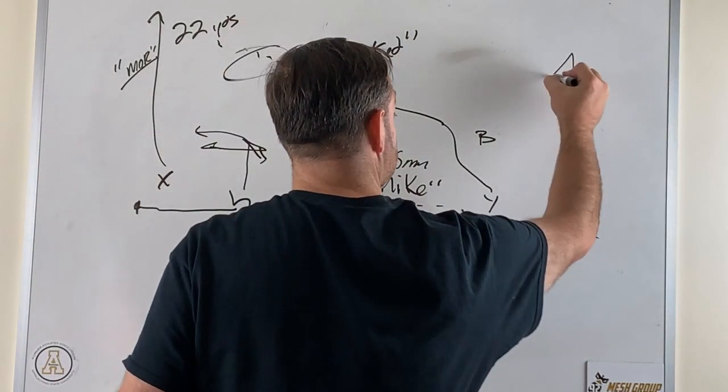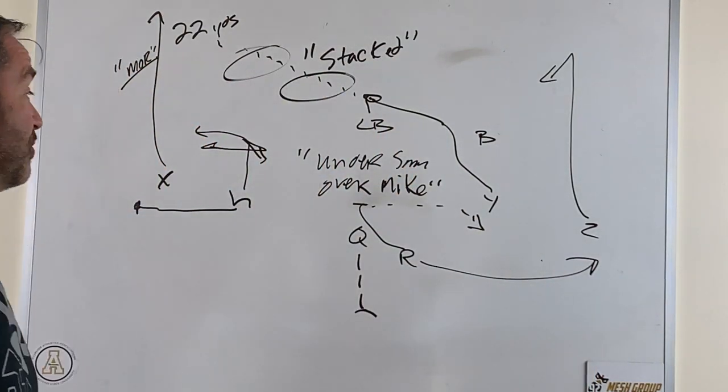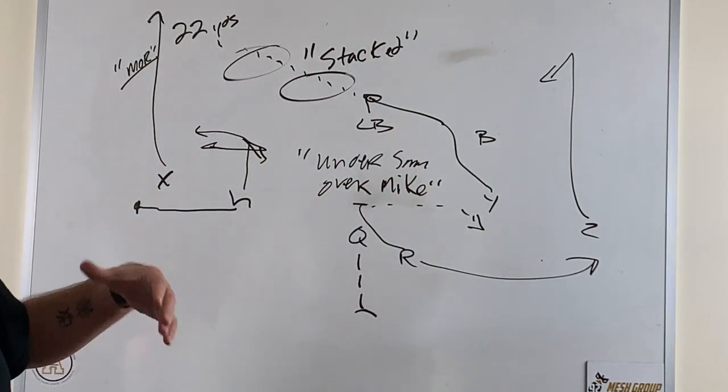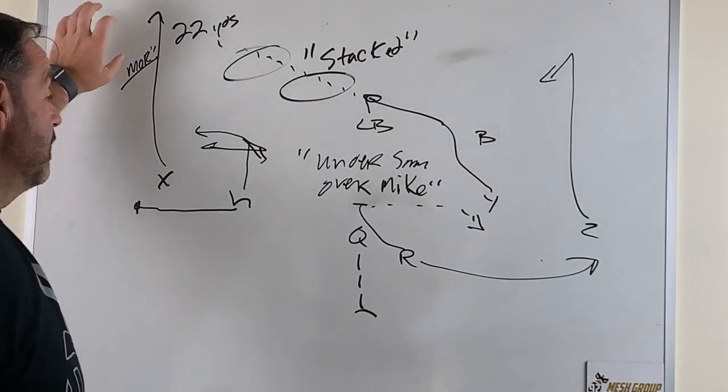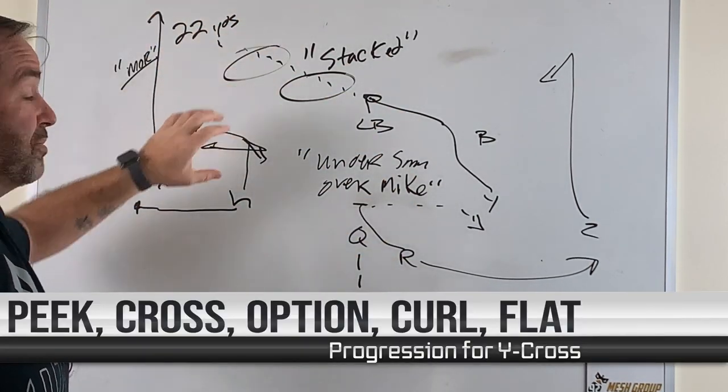And then on the backside, we just tell him we're going to run curl flat. In a perfect world, I'd say we go peak, cross, option, curl flat, but really we go peak, cross, option, take off.